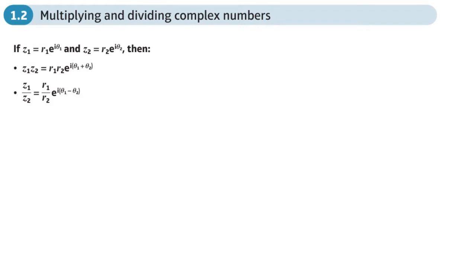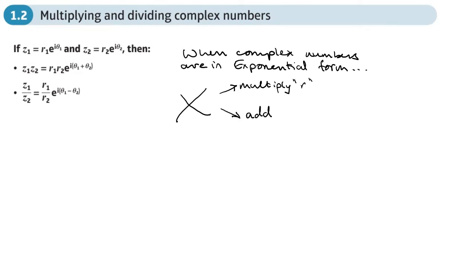It makes it really easy to multiply and divide numbers in exponential form. When complex numbers are in exponential form, if we want to multiply them we just multiply the modulus and we add the arguments.